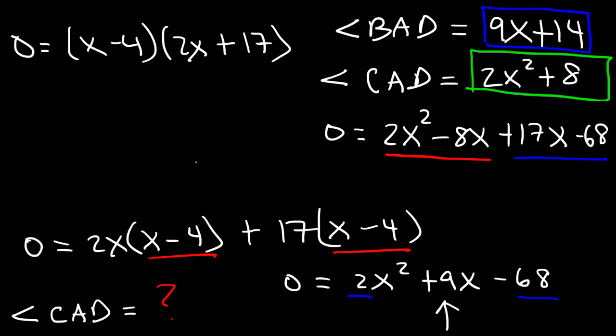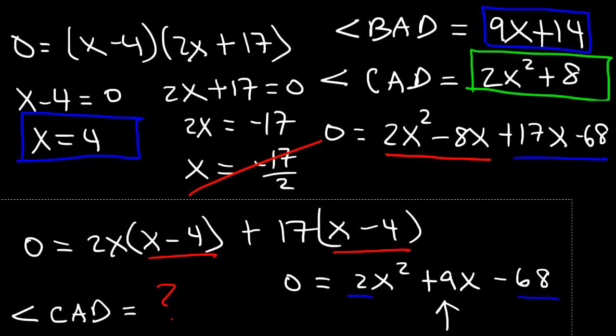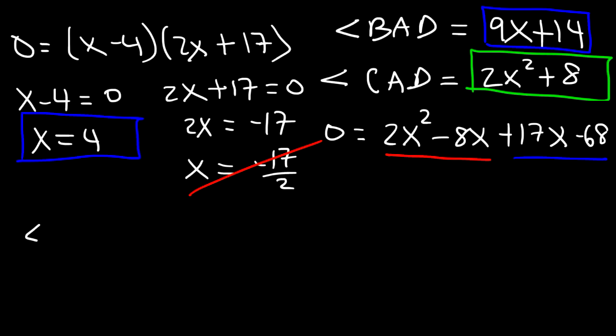So now to find the value of x, we need to set each factor equal to 0 separately. So x minus 4 equals 0, and 2x plus 17 equals 0. For the second one, we need to subtract both sides by 17. So 2x equals negative 17, and then divide by 2. So x is negative 17 over 2. However, if we take this answer and plug it into 9x plus 14, that's going to give us a negative angle, so therefore this solution doesn't make sense. Now let's focus on the other one. If we add 4 to both sides, then we can see that x equals 4.